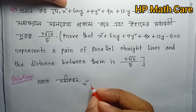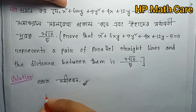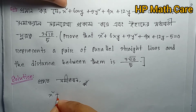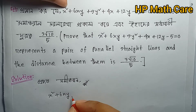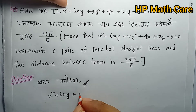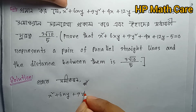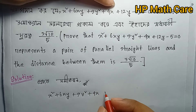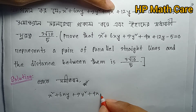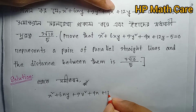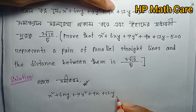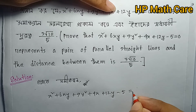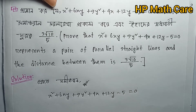Reading the equation term by term: x squared, plus 6xy, plus 9y squared, plus 4x, plus 12y, minus 5, equals zero.